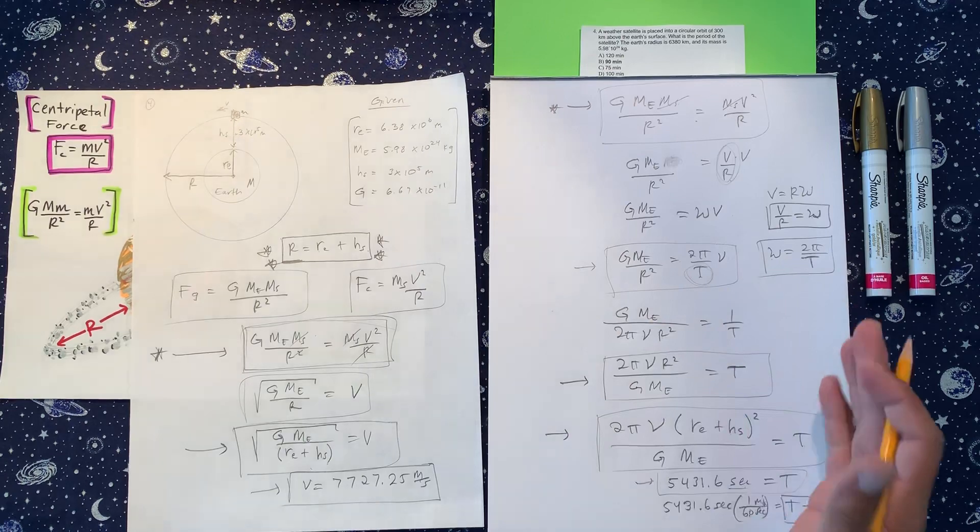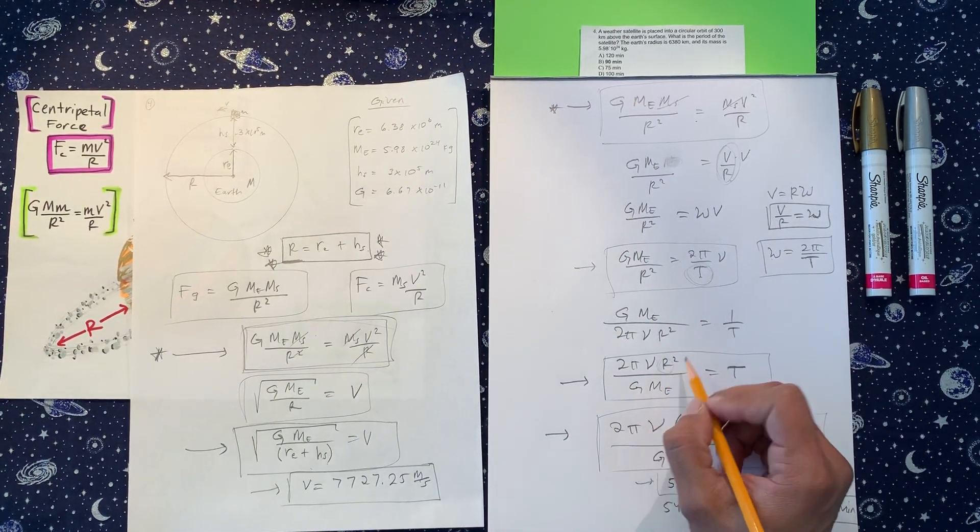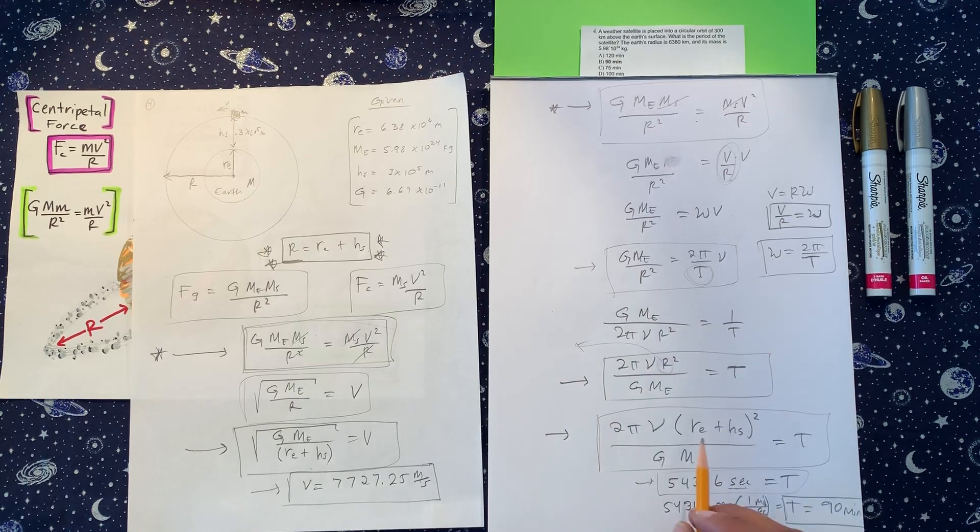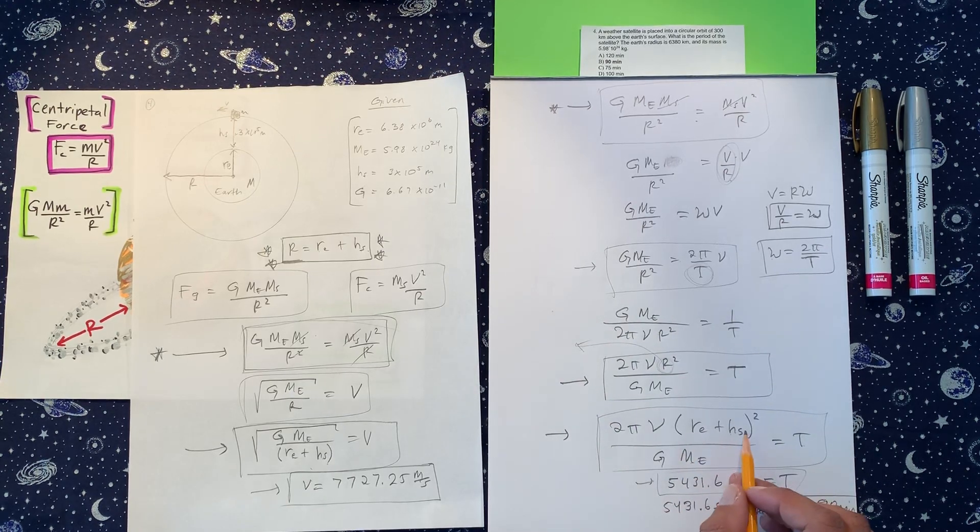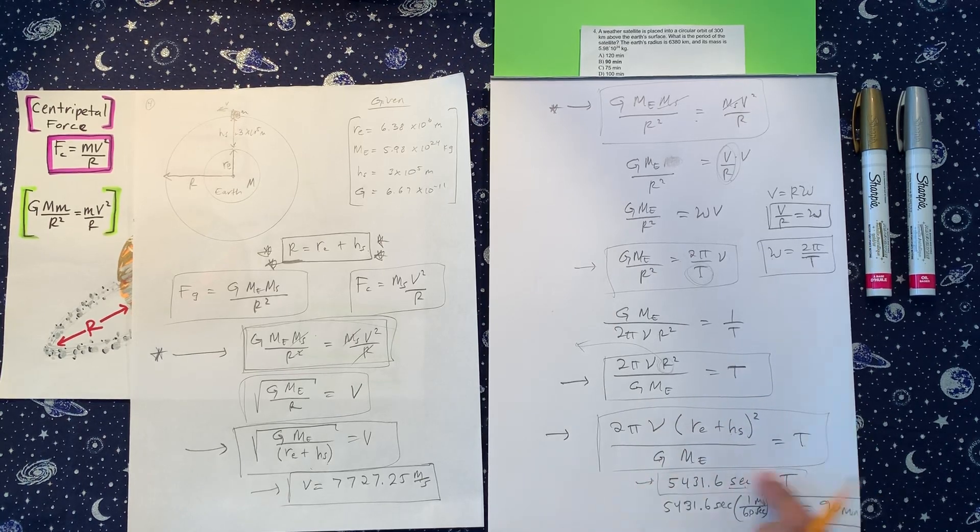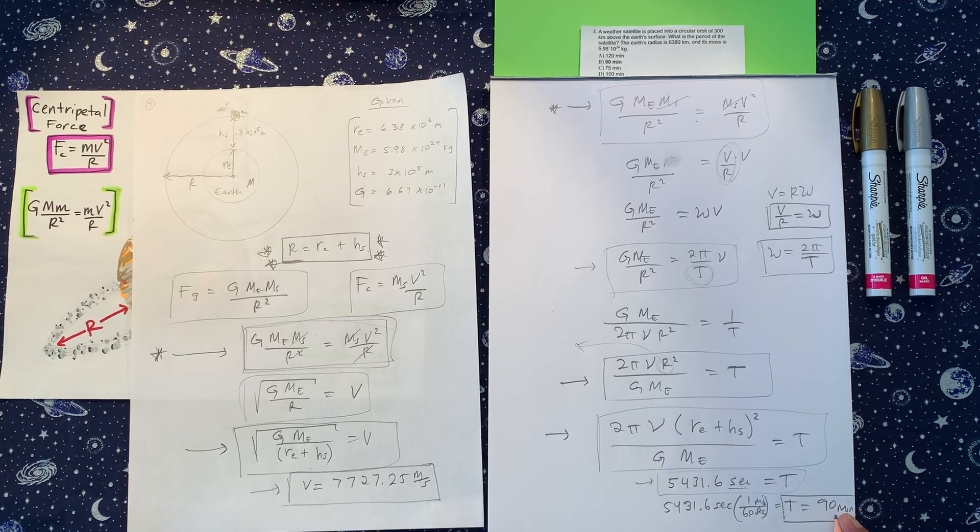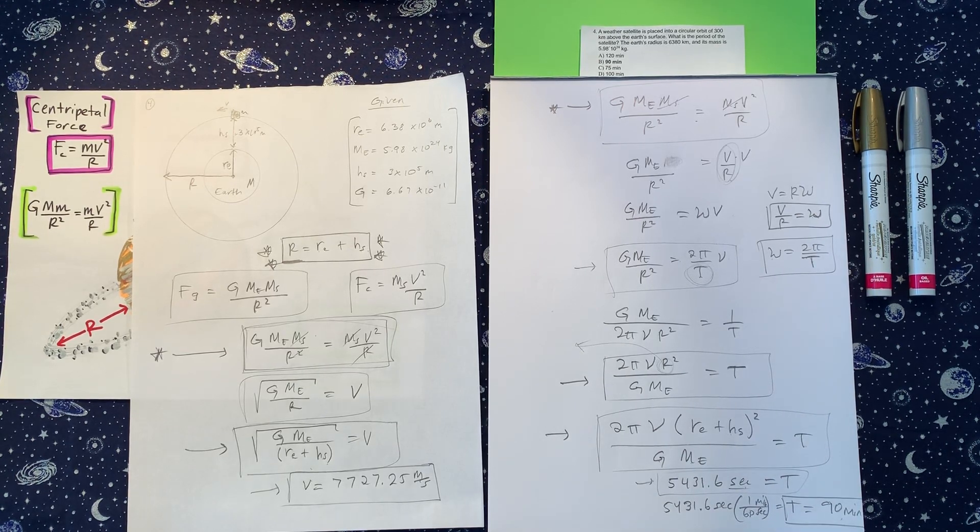And finally, once you have that solve, do some algebra, and don't forget the last part. So this R right here is going to be r_e plus height of the satellite. And then the final answer, don't freak out because you have to convert that to minutes. Okay. So that's it for that one.